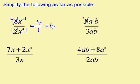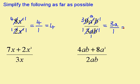3s into 9 goes 3; 3s into 3 goes 1. a's into a squared goes a; a's into a gives 1. b's into b gives 1; b's into b gives 1. So I now have 3 times a times 1, which is 3a, over 1 times 1 times 1, which is 1, and this gives me 3a.